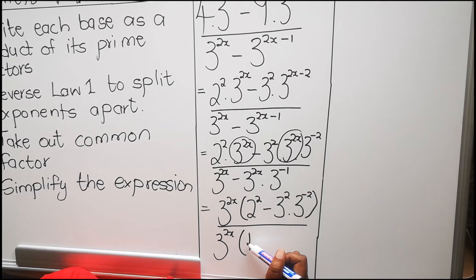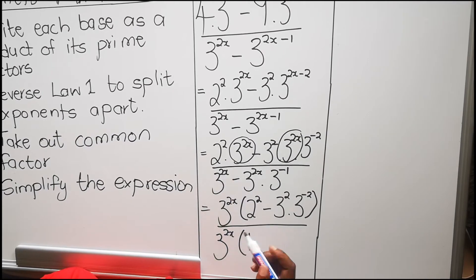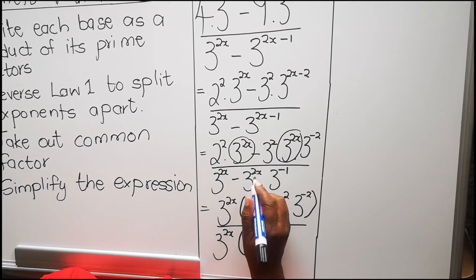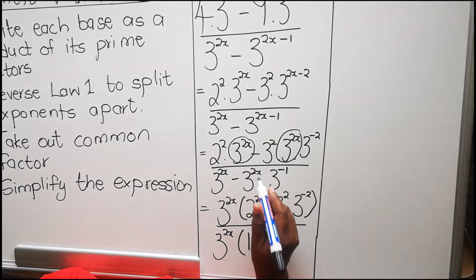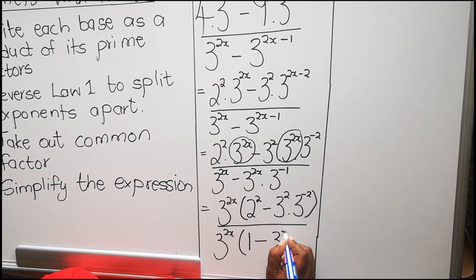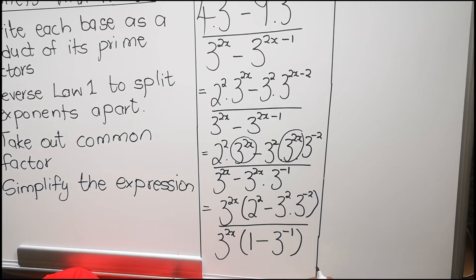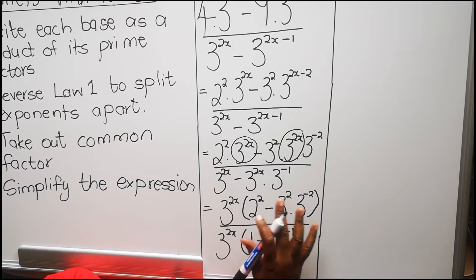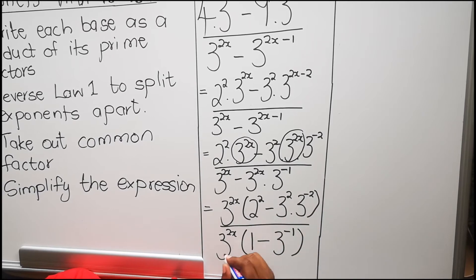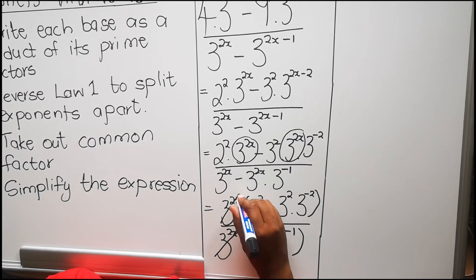Because if it's not there, that term is going to disappear. Minus — that's the common factor that you took out — and we are left with 3 to the power minus 1. Now we have brackets. Now we can cancel. So we can cancel those terms.